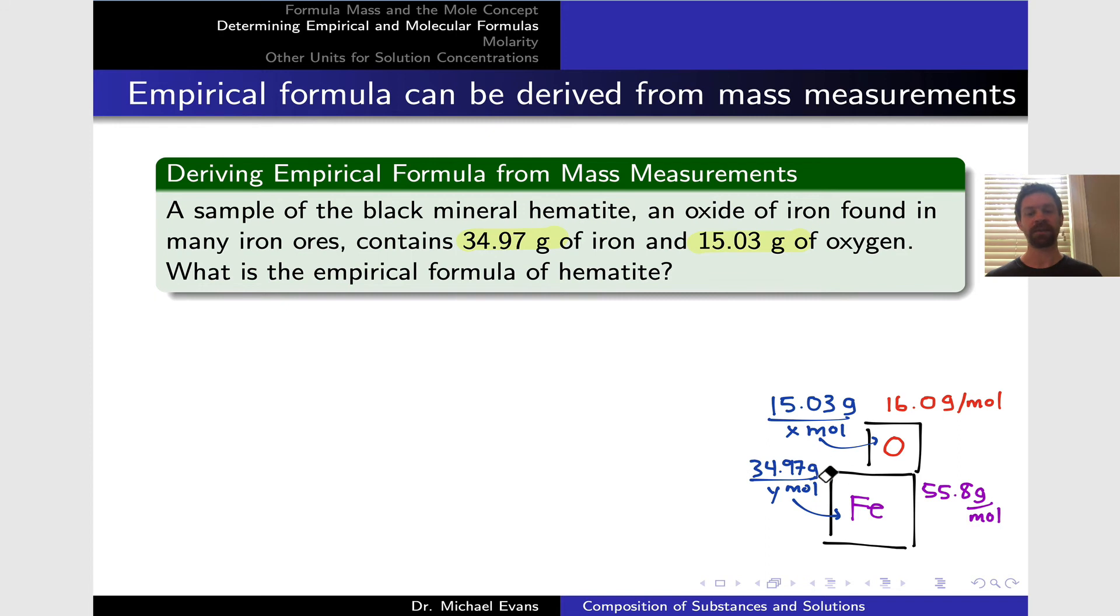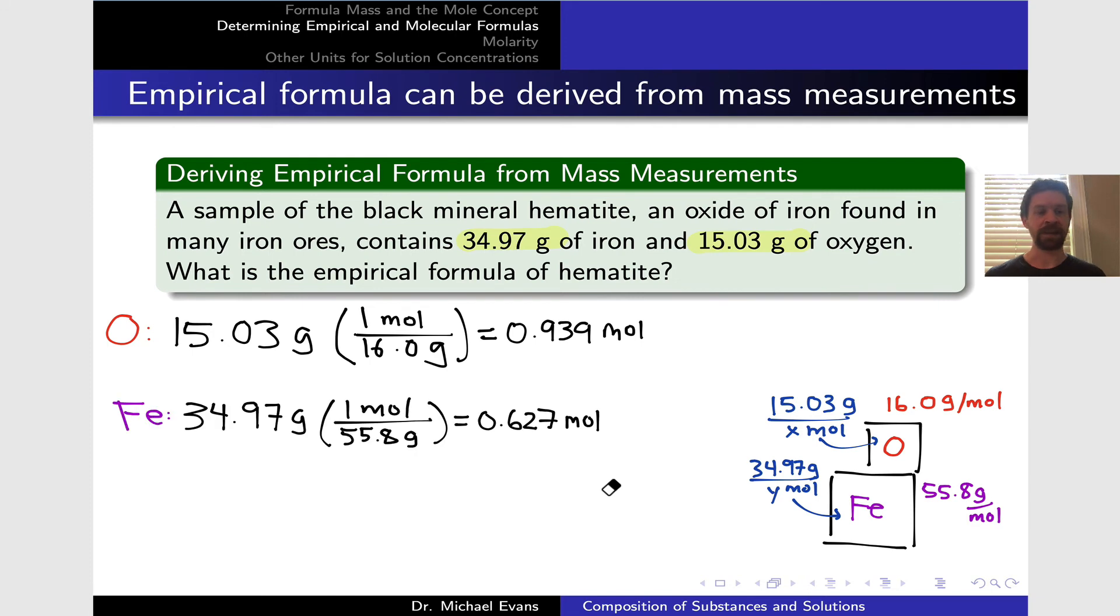This allows us to set up equations to calculate the number of moles. For oxygen, the total moles of oxygen atoms is 0.939 moles—we get this by dividing the mass by the molar mass. Similarly, dividing the 34.97 grams of iron by the molar mass tells us we have 0.627 moles of iron. So step one is complete: we've converted the masses into moles. This is a very common step in stoichiometry problems—get yourself out of mass land and into mole land.